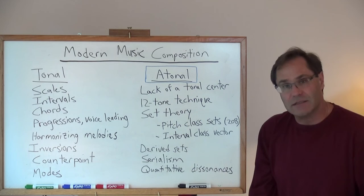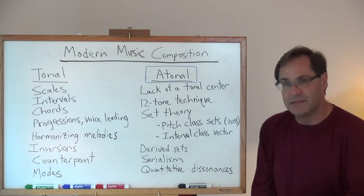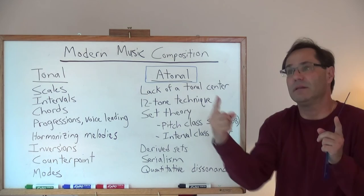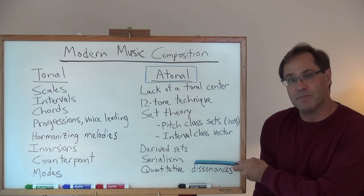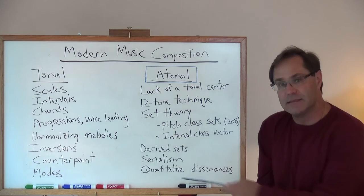We'll talk about the interval class vector and how that's used to actually give you an idea of how that piece of music is going to sound with respect to that pitch class set. We'll talk about derived sets, how you can take a set, say a hexatonic set and build it up into a full chromatic set. We'll talk about serialism and methodology of basically doing operations serially. Then we'll talk about calculating dissonances in a quantitative manner so that you get an idea of how dissonant something is.